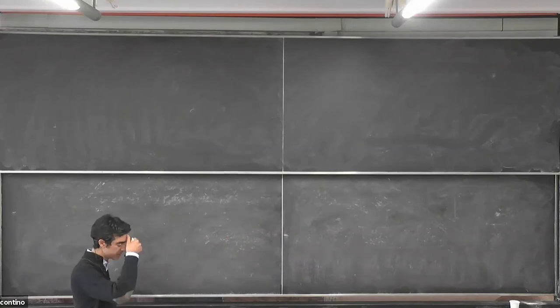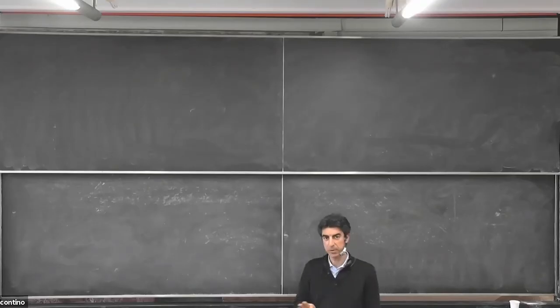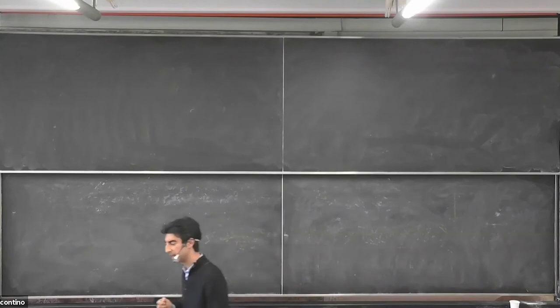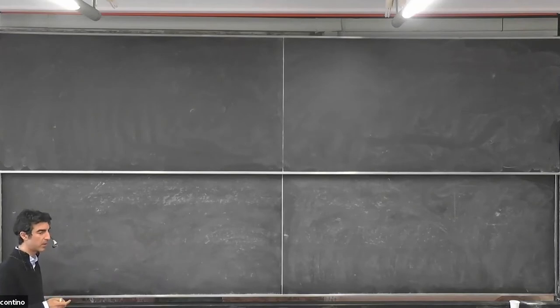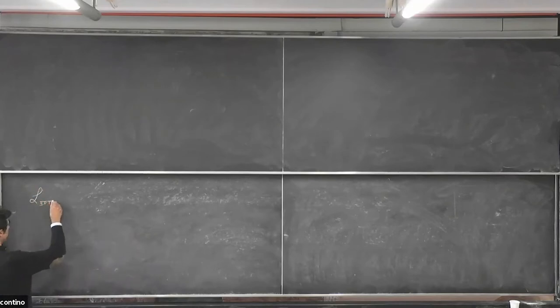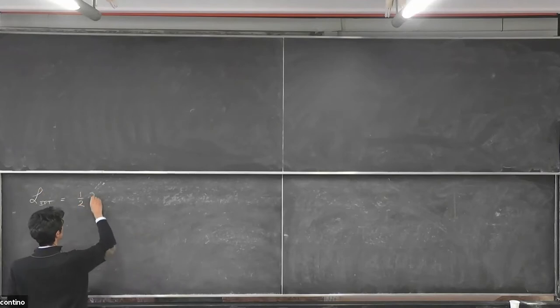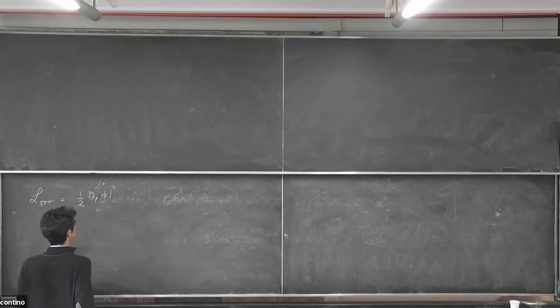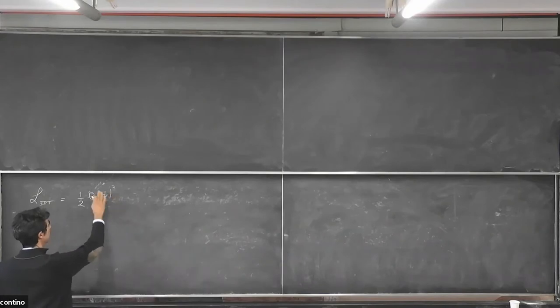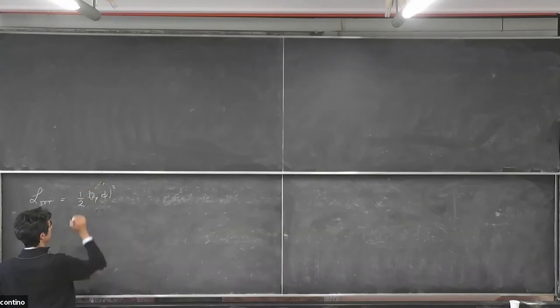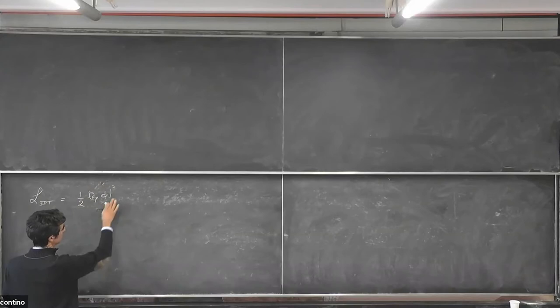Let's start. Before resuming the discussion on matching, I want to rectify a slightly incorrect statement I made yesterday. There was a question about the importance of wave function correction. In the effective theory we were writing the Lagrangian without the wave function. That's actually justified only if you're interested in the value of the coefficient c, but if you want to extract the value of the coupling lambda, then this wave function does play a role.